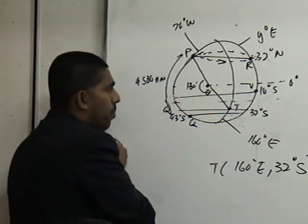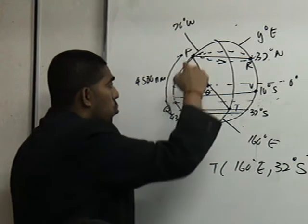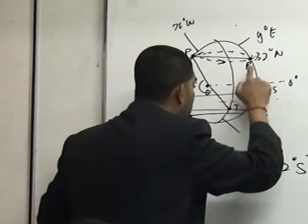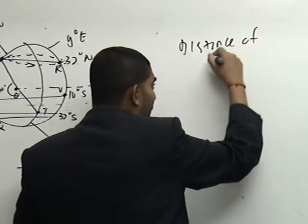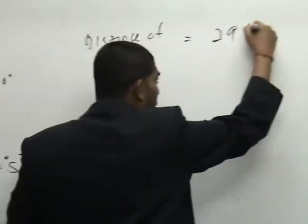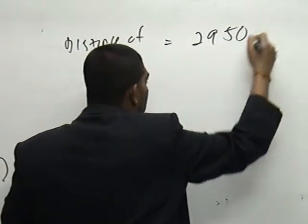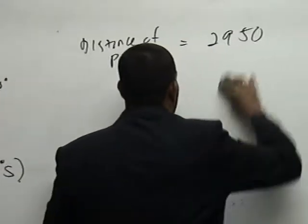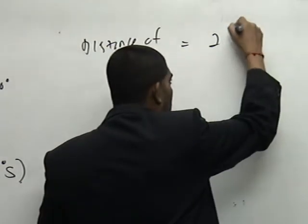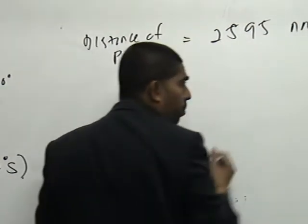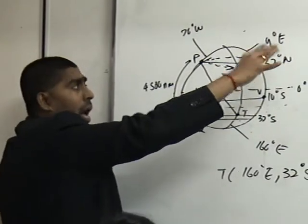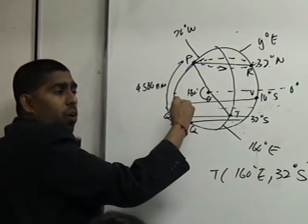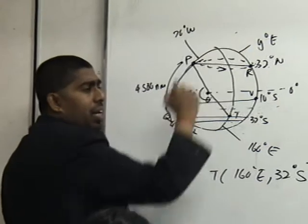P due east to R measured along their common parallel of latitude is 2595 nautical miles. So, in other words, they have given us what? The distance of P to this point here, R. Okay, distance of PR is given as what? In the earlier question, I did for you distance along the longitude. Now, here is distance along the latitude. Are you clear?